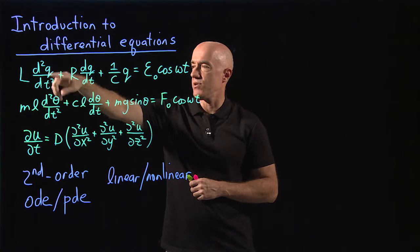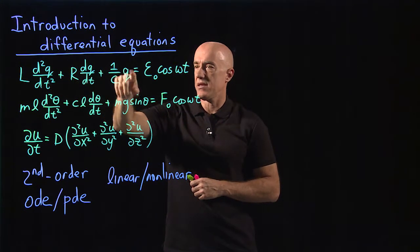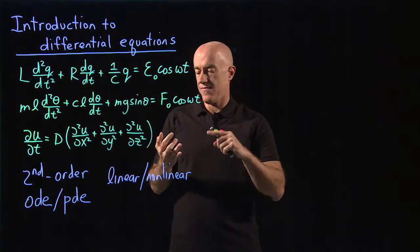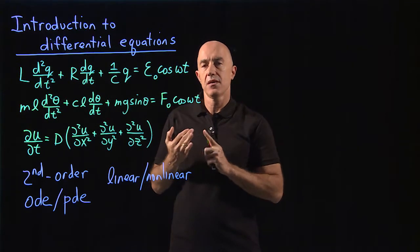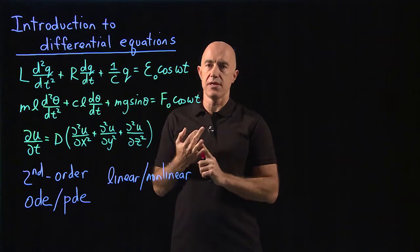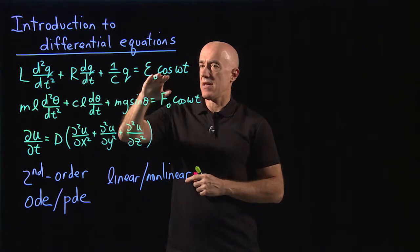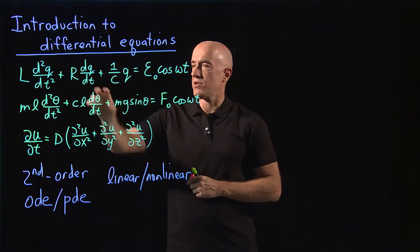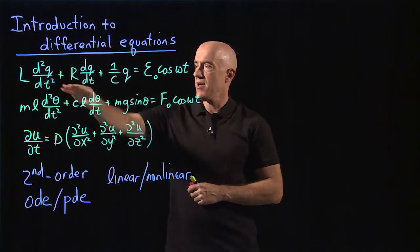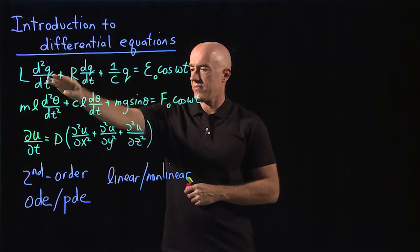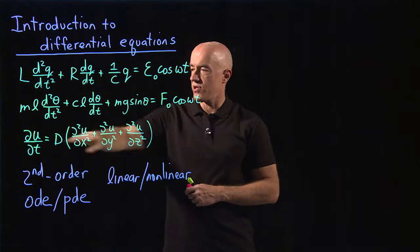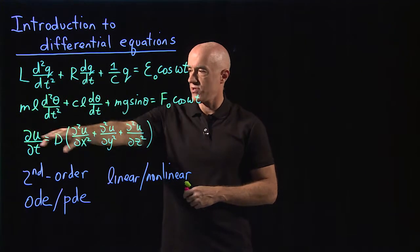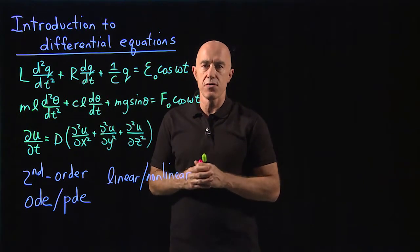So there's a d squared q dt squared, a dq dt, and a q. There is never a q squared — there is never a function of q that has terms in the Taylor series that are above q. In that case, it's called linear. The coefficients can be functions of time in a linear equation, but you must only have q by itself. The third equation is also linear in u — so there's no u squared term in this equation either.